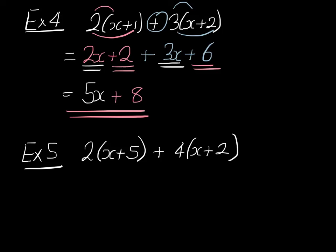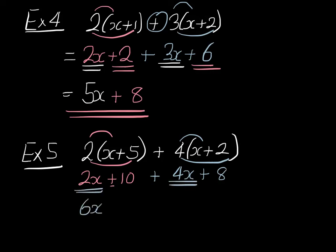Well, what we would do is 2 multiplied by x is 2x. And 2 multiplied by 5 is plus 10. And then we would keep our plus here. And then we would do 4 multiplied by x. And 4 multiplied by 2, which is 8. So we would collect like terms. Here we've got 2x and 4x, which is 6x. And here we have 10, add 8, which is 18.